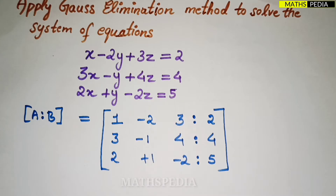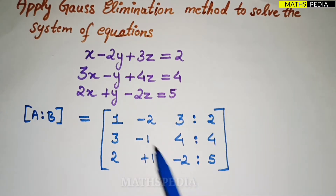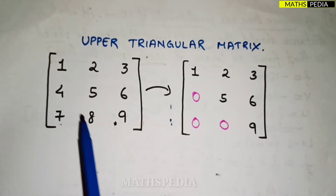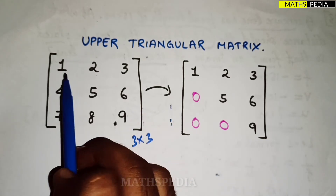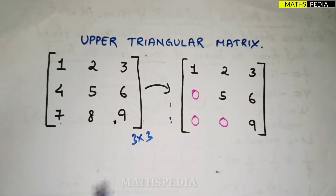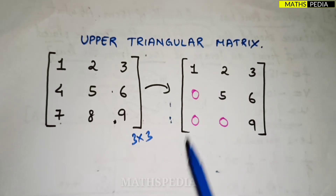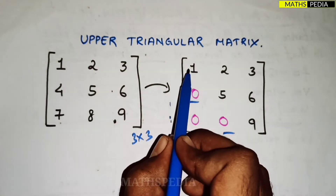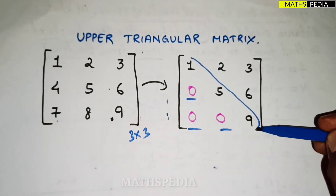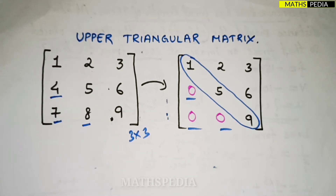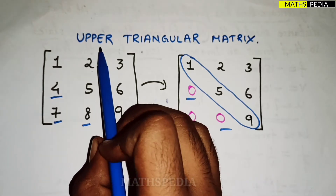The next step is to convert the 3×3 coefficient part of this matrix into an upper triangular matrix. In an upper triangular matrix, all elements below the diagonal should be zero. For example, in a 3×3 matrix, the diagonal elements run top-left to bottom-right, and below that diagonal all elements must be zero — so we need to make those elements four, seven, and eight become zero.